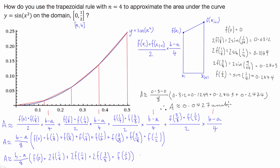Units squared. That's using the trapezoidal rule to approximate the area under the curve of that function over the given domain, by first deriving the trapezoidal rule for n equals 4 and then substituting in our values. I hope that helps.